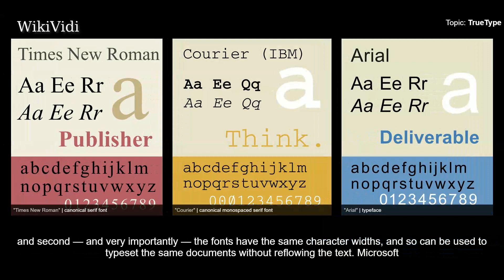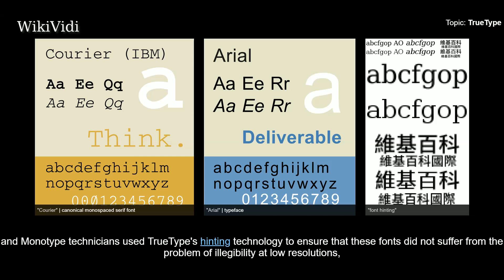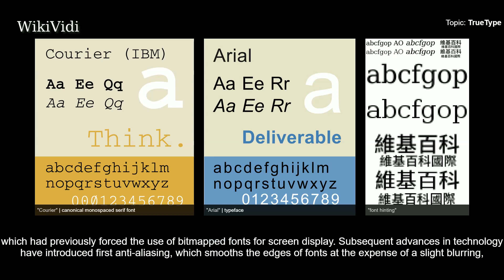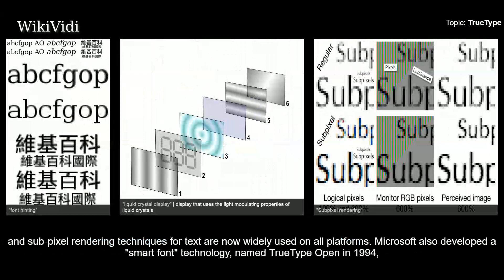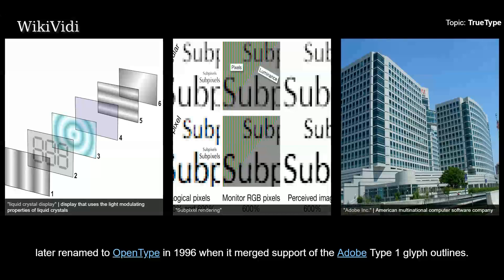Microsoft and Monotype technicians used TrueType's hinting technology to ensure that these fonts did not suffer from the problem of illegibility at low resolutions, which had previously forced the use of bitmapped fonts for screen display. Subsequent advances in technology have introduced first anti-aliasing, which smooths the edges of fonts at the expense of a slight blurring, and more recently subpixel rendering, which exploits the pixel structure of LCD-based displays to increase the apparent resolution of text. Microsoft has heavily marketed ClearType, and subpixel rendering techniques for text are now widely used on all platforms. Microsoft also developed a smart font technology named TrueType Open in 1994, later renamed to OpenType in 1996 when it merged support of the Adobe Type 1 glyph outlines.